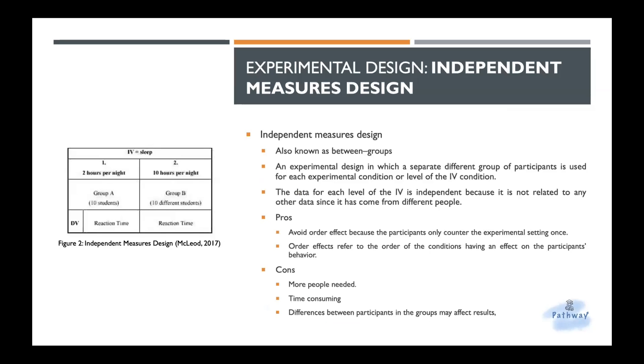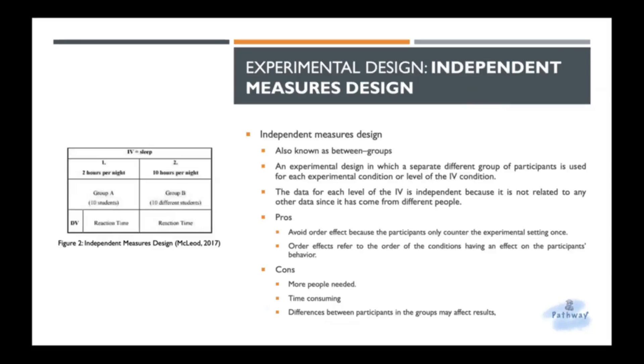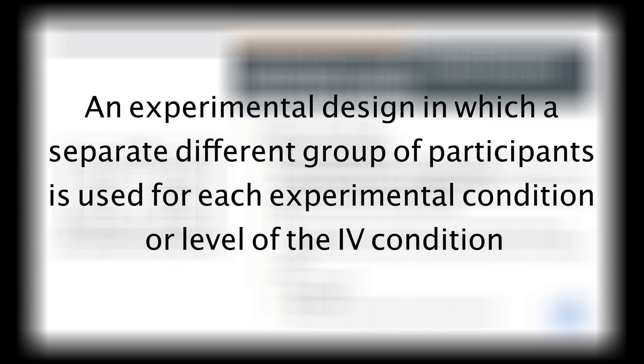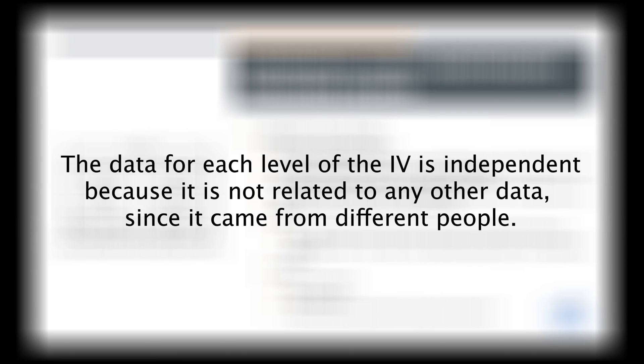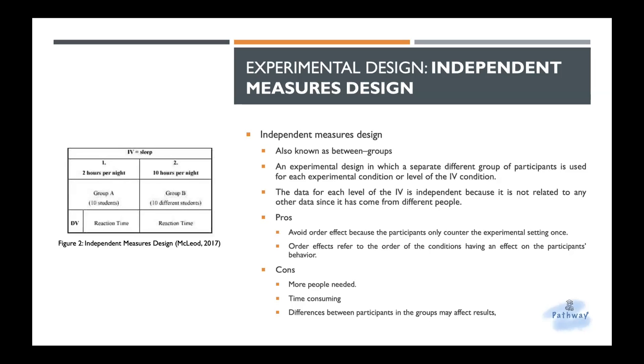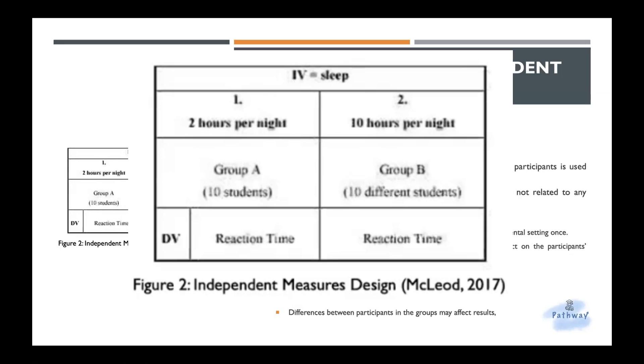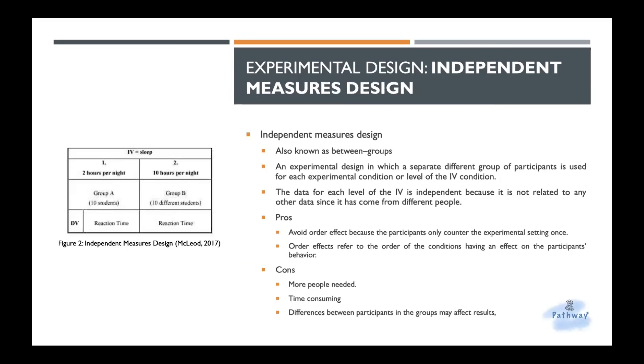So with the independent measures design, it's also known as between groups design. In an independent measures design, a separate group of participants is used for each experimental condition or level of the independent variable. Which means that the data of each level of the IV is independent because it is not related to any other data. It has come from different people. If you take a look at the picture on the left, you will see that group A has 10 students, and then group B or condition B has another 10 different sets of students. This is what they mean by allocated, like which group or conditions you've been placing in.